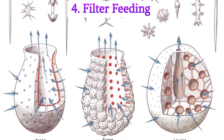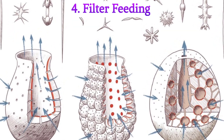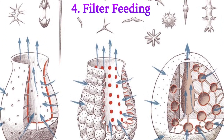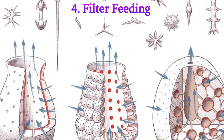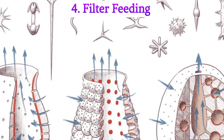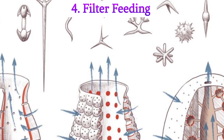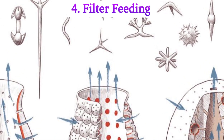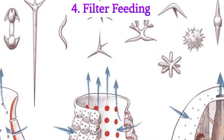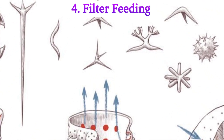Point 4: Filter-feeding. Sponges are filter-feeders. They use specialized cells called choanocytes to create water currents that bring in microscopic food particles. These particles are trapped and digested within the sponge's body.